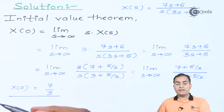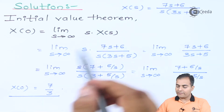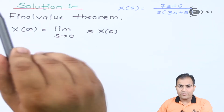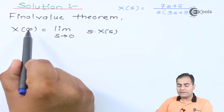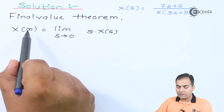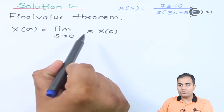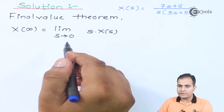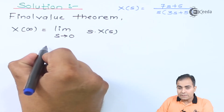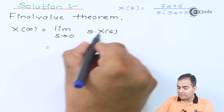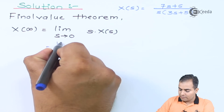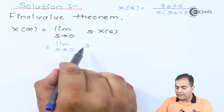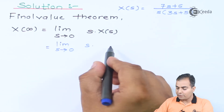Now we find the final value of X(s). According to the final value theorem, x(infinity) — the value as t tends to infinity — equals the limit as s tends to zero of s times X(s). Simply substitute the X(s) value into this property.